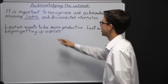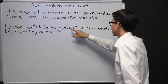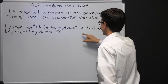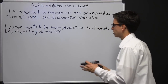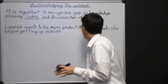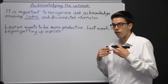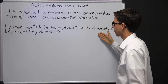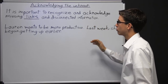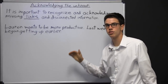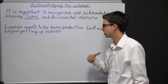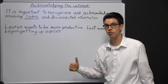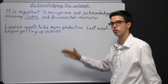Remember, you need to acknowledge the missing links and disconnected information. These two sentences are disconnected — there's no link between them. 'Lauren wants to be more productive' is one thought, and 'last week, she began getting up earlier' is another. Of course, we know the author is implying she started getting up earlier to be more productive, but we really don't know that because it's never stated. We can't just assume information or make up links between unrelated concepts unless the writer tells us we can relate those two concepts.